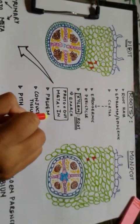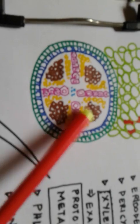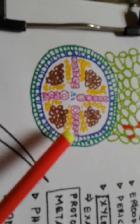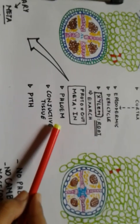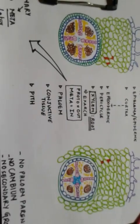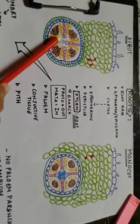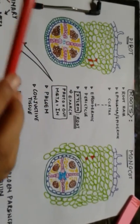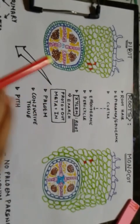Moving to phloem — zooming in, the brown structures here represent phloem tissue. The conjunctive tissue is the tissue present between the phloem and the xylem. I've used different colors in this diagram because most books don't show these structures clearly, creating confusion — the color-coded diagram helps distinguish each component.